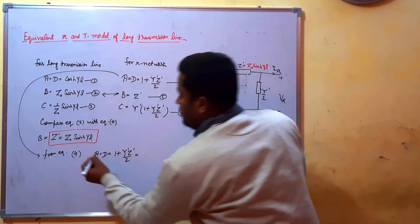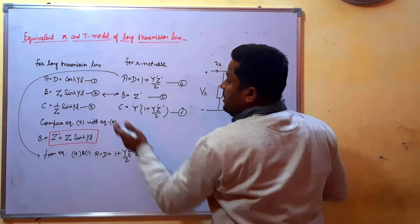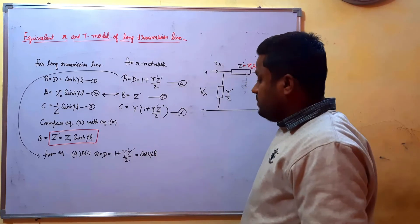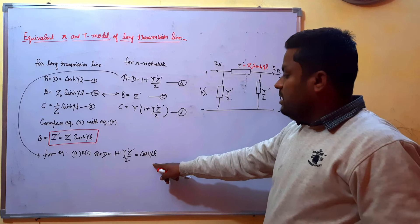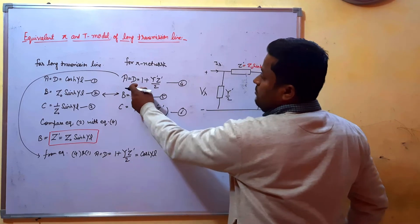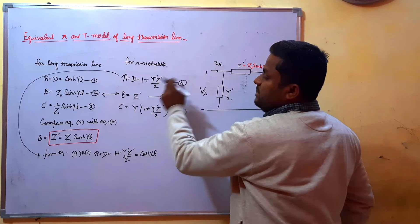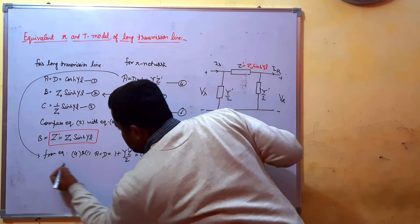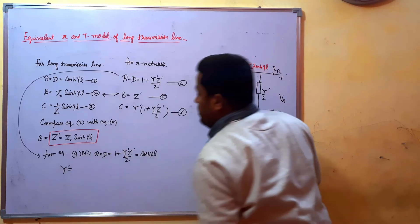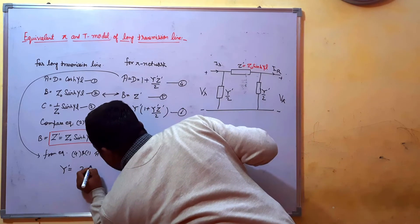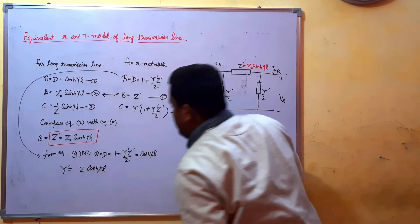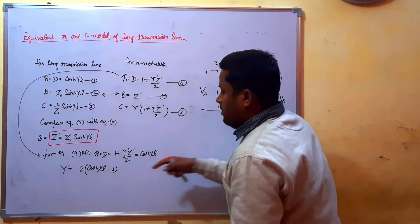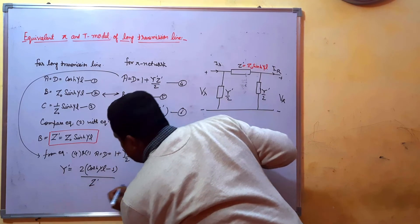From equation A, we have: 1 plus Y'Z'/2 is equal to cosh(γL). From this we can write Y' is equal to 2 times (cosh(γL) minus 1) divided by Z'.